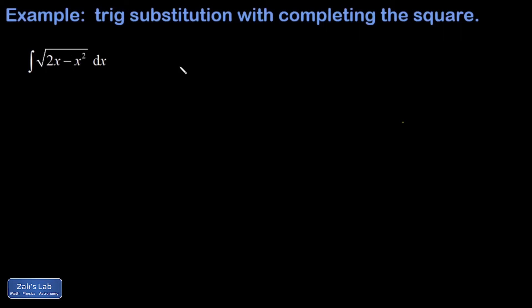In this video we're doing an indefinite integral that requires a trig substitution, but to set up the trig substitution we have to complete the square first. We want to complete the square on the expression 2x minus x squared. This is going to be easier if we get the factor of negative 1 out of there and then think about how to complete the square on x squared minus 2x.